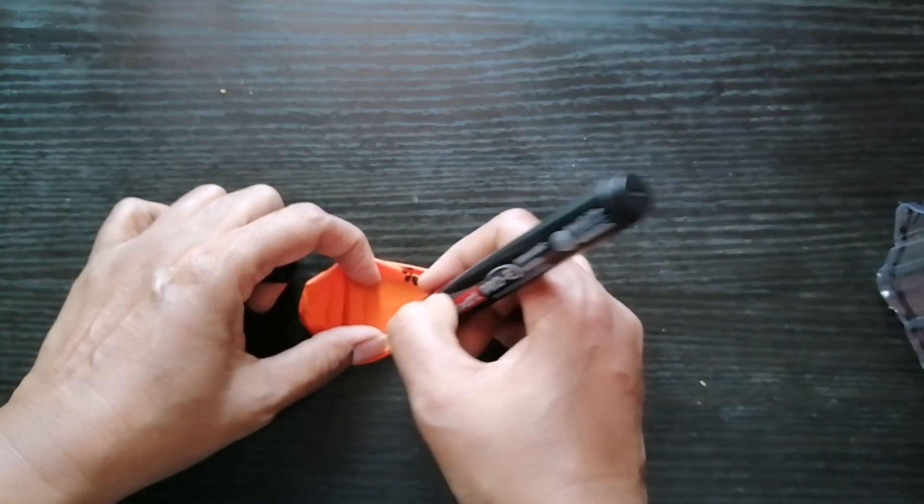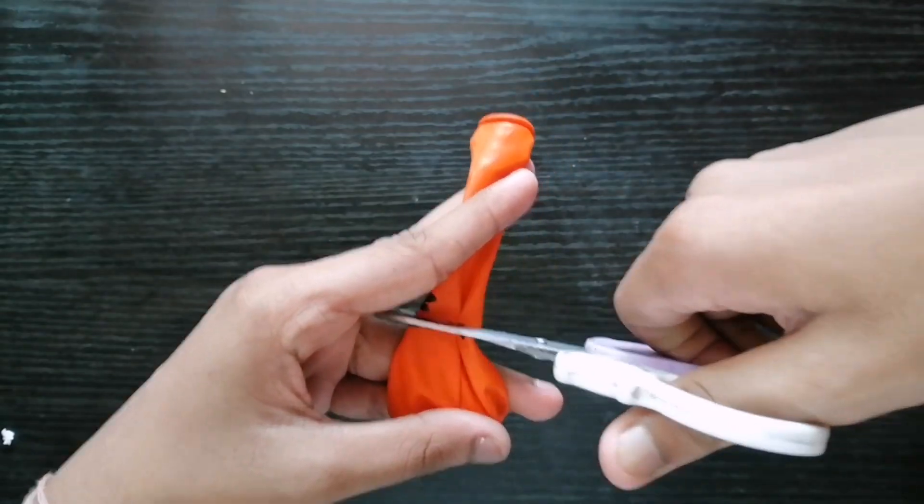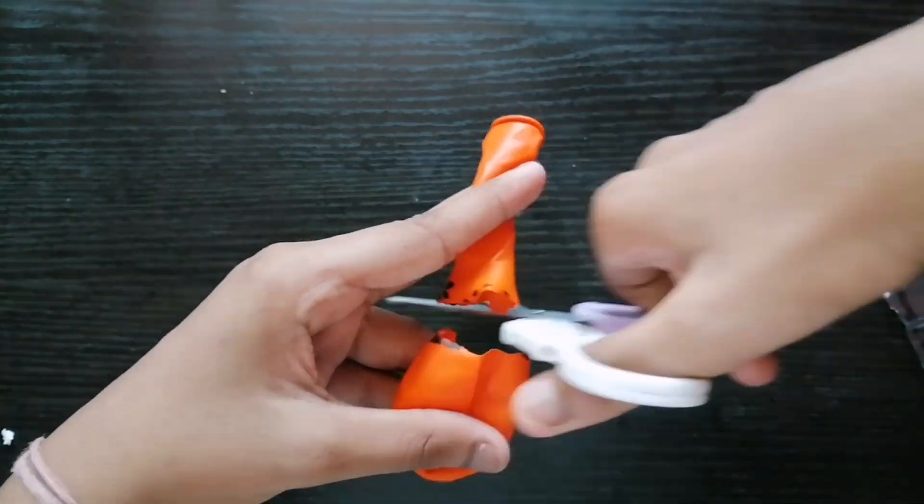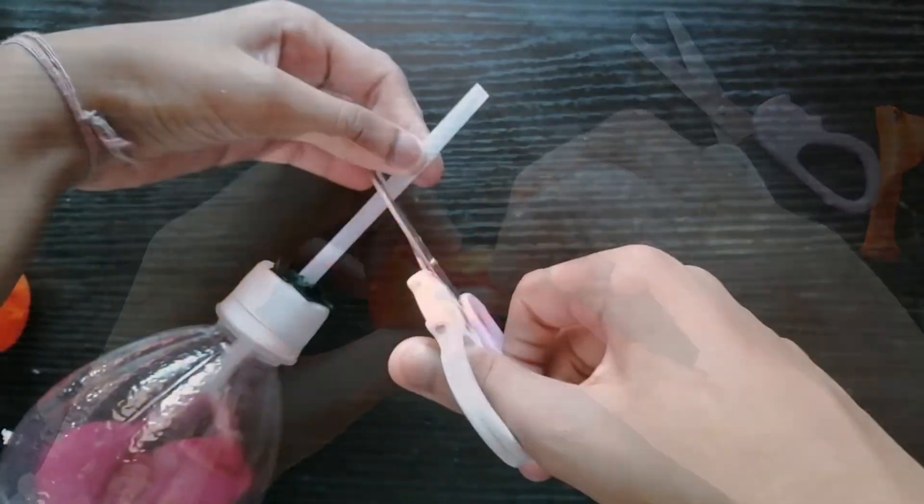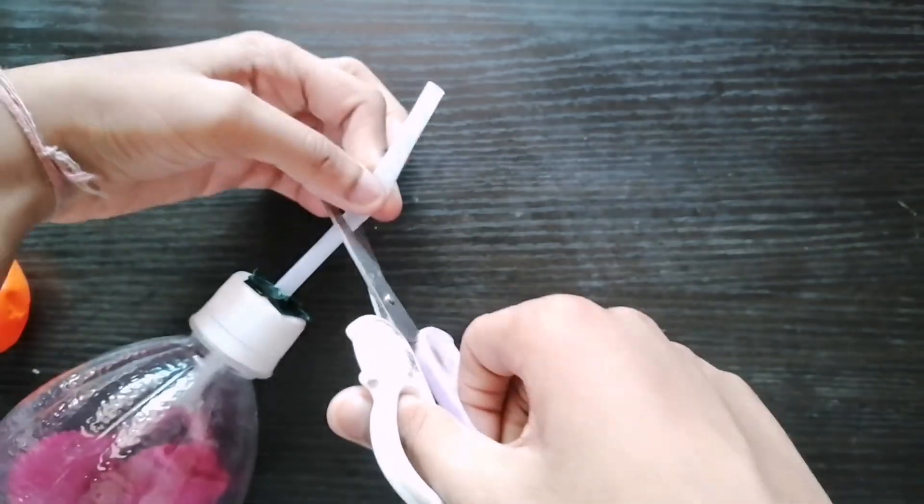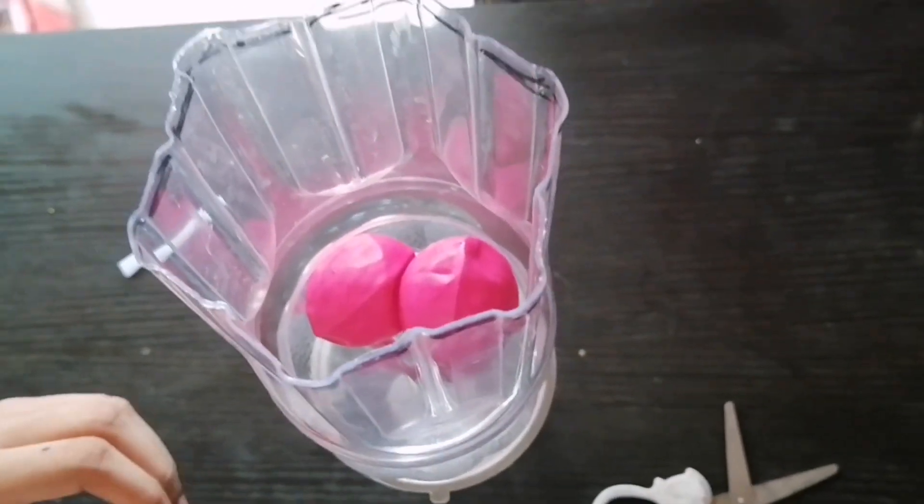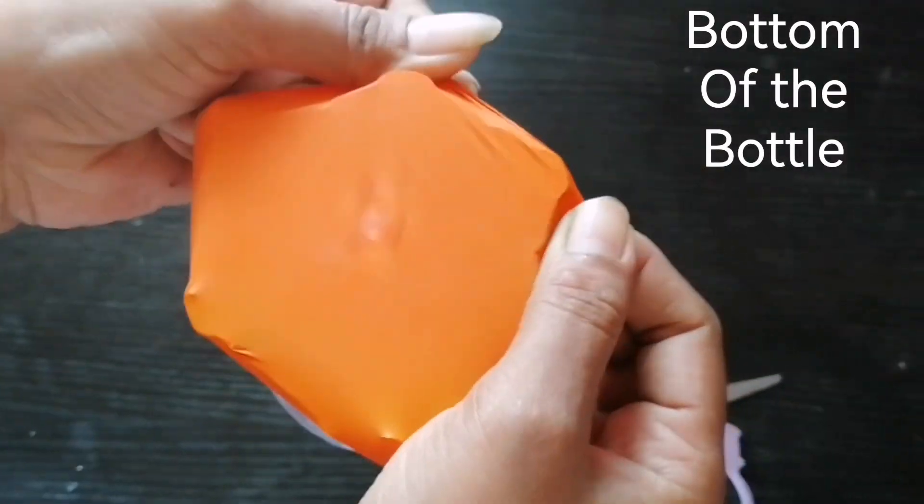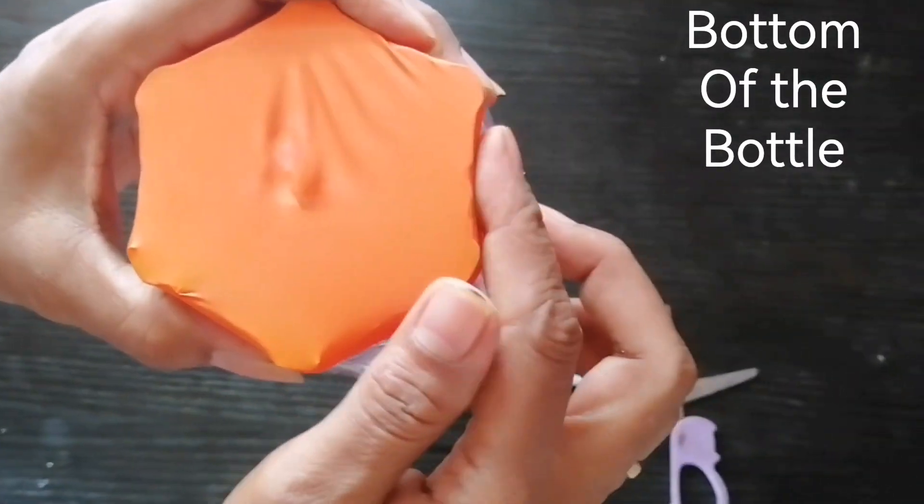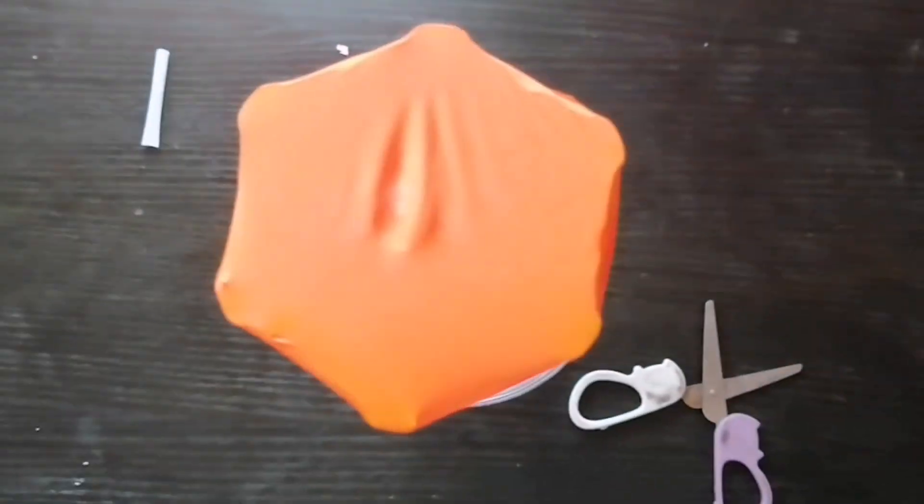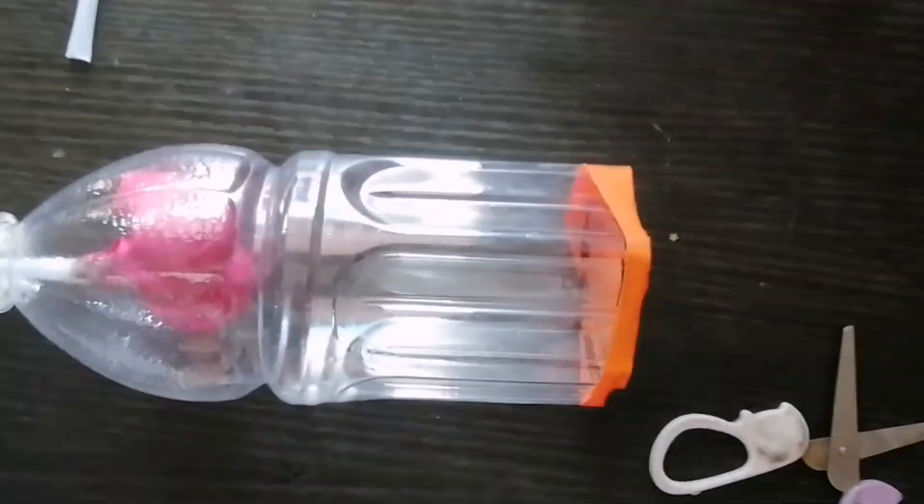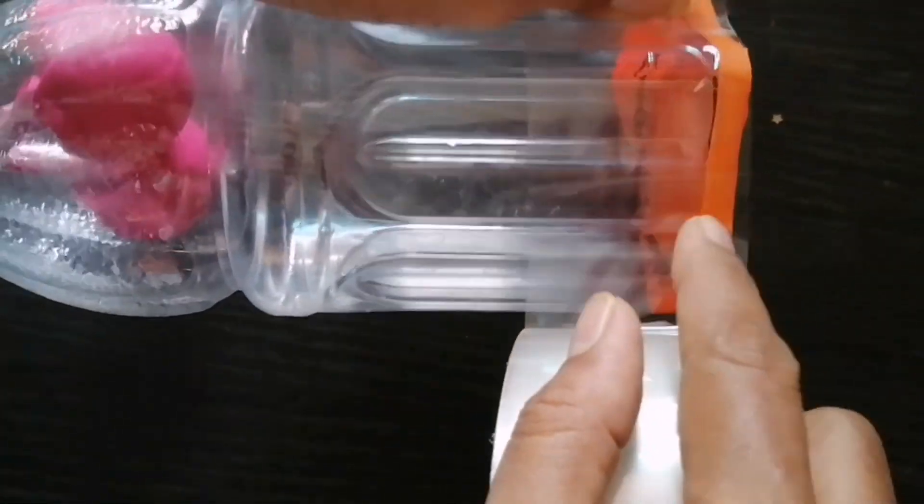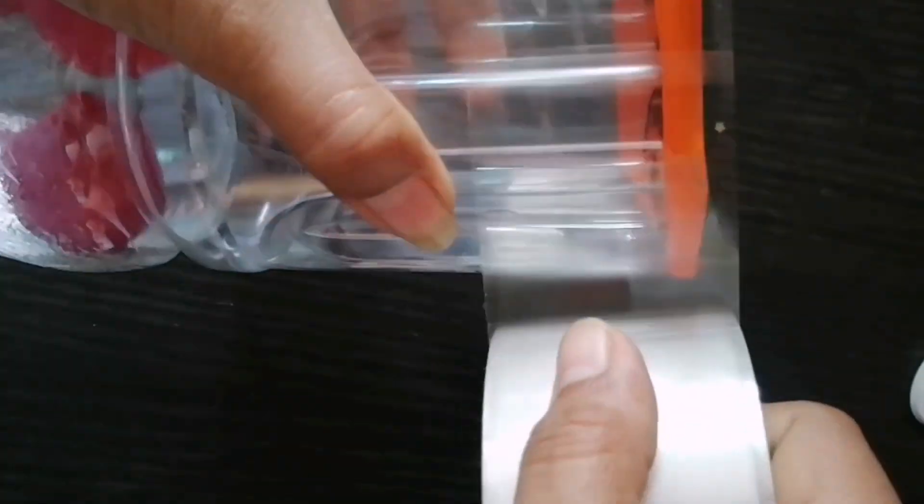Now take a balloon and cut from the middle. Stretch and attach to the bottom of the bottle. Now secure it with cello tape.